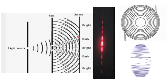Relating Young's double slit experiment to today's diffractive IOLs, the steps on the IOL are analogous to the two slits. They create constructive interference to produce focal points. Many bright spots are created in Young's double slit experiment, but we don't need so many focal points. For a bifocal IOL we need only two focal points, and for a trifocal IOL we need only three focal points. The Young's double slit experiment is thus adapted to suit the needs of ophthalmology patients.